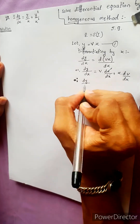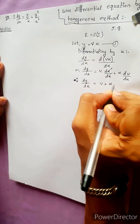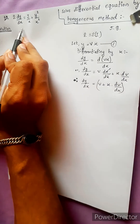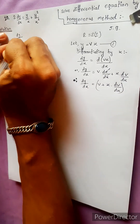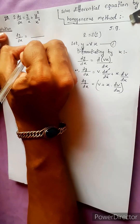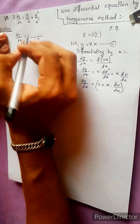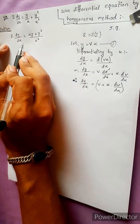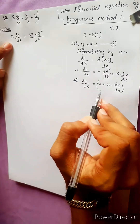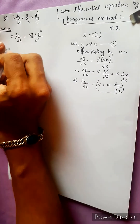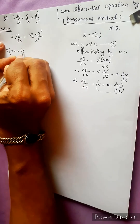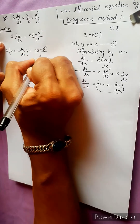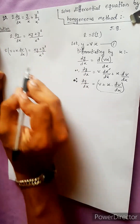So dy/dx equals to v plus x dv/dx. The original equation dy/dx equals xy plus y squared divided by x squared, setting up substitution with x, y terms.